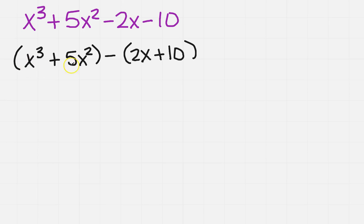So if I look at the first one, the smallest number of x's, I've got 3 and 2, so I've got x²(x + 5) minus, the only thing in common over here is a 2, and I've got x + 5.